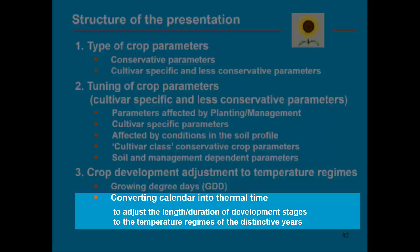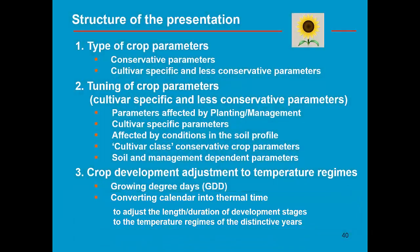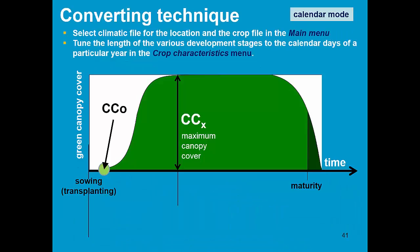By running AquaCrop in thermal time, AquaCrop will automatically adjust its calendar to the temperature regime of the year or the planting date. The converting technique consists of selecting the climate file for the location and the crop file in the main menu. It is the climate in which the crop is growing.